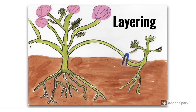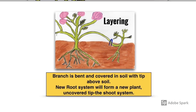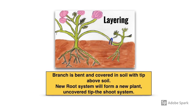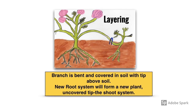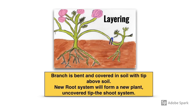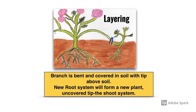The next method is layering. Layering involves taking a branch that is still attached to a parent plant and securing it so that part of the branch is below the soil and the tip is above the soil. The buried part will form the new root system, and the exposed tip will form the new shoot system.